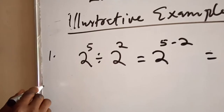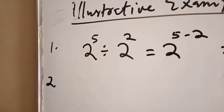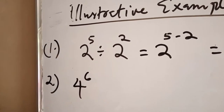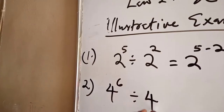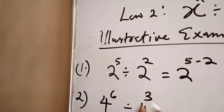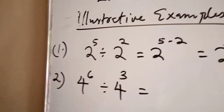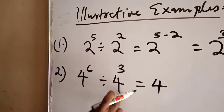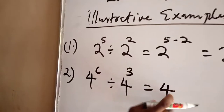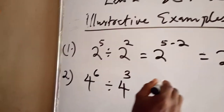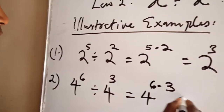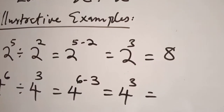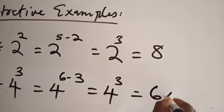Example number 2: 4 raised to the power of 6 divided by 4 raised to the power of 3. Take one of the bases, 4, to represent all and then subtract the powers: 6 minus 3. That gives you 4 raised to the power of 3, which is equal to 64.